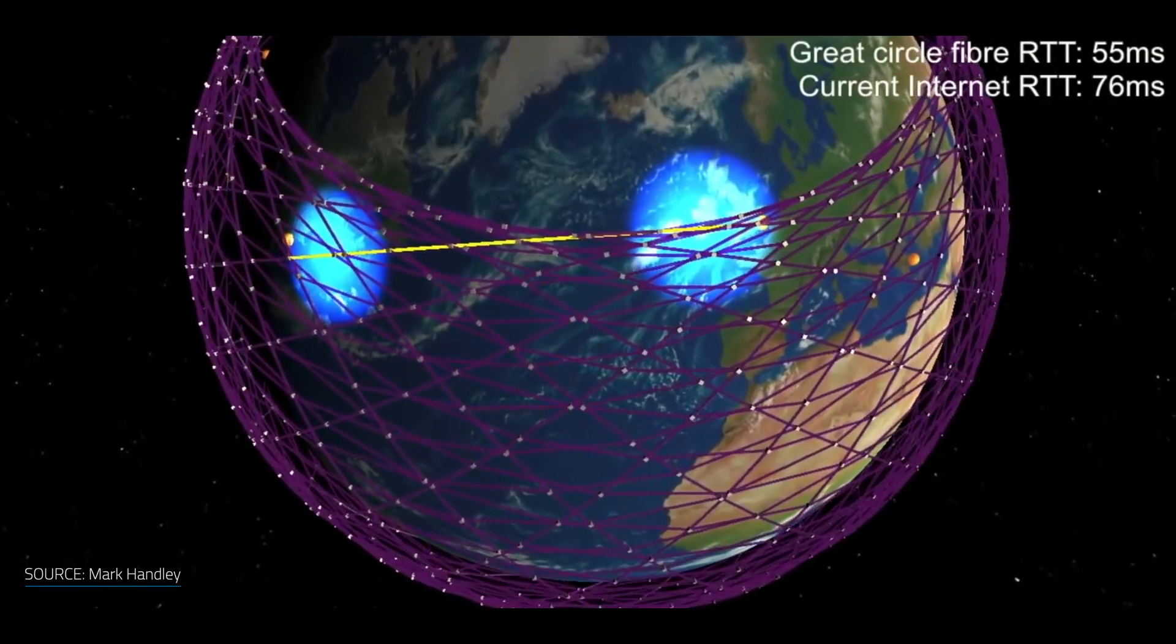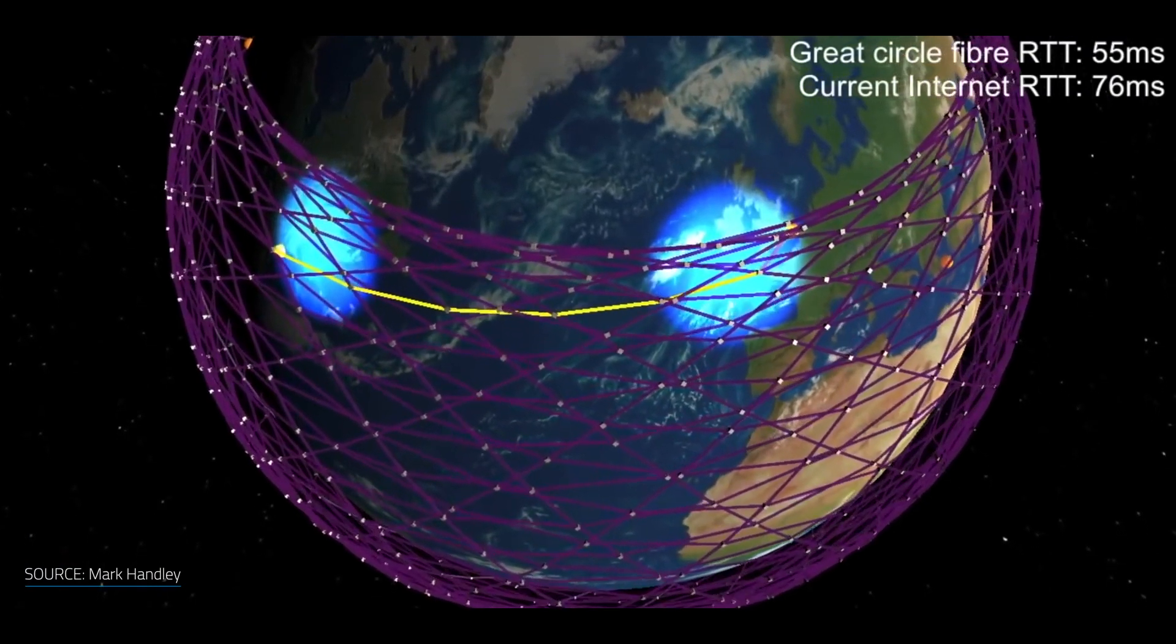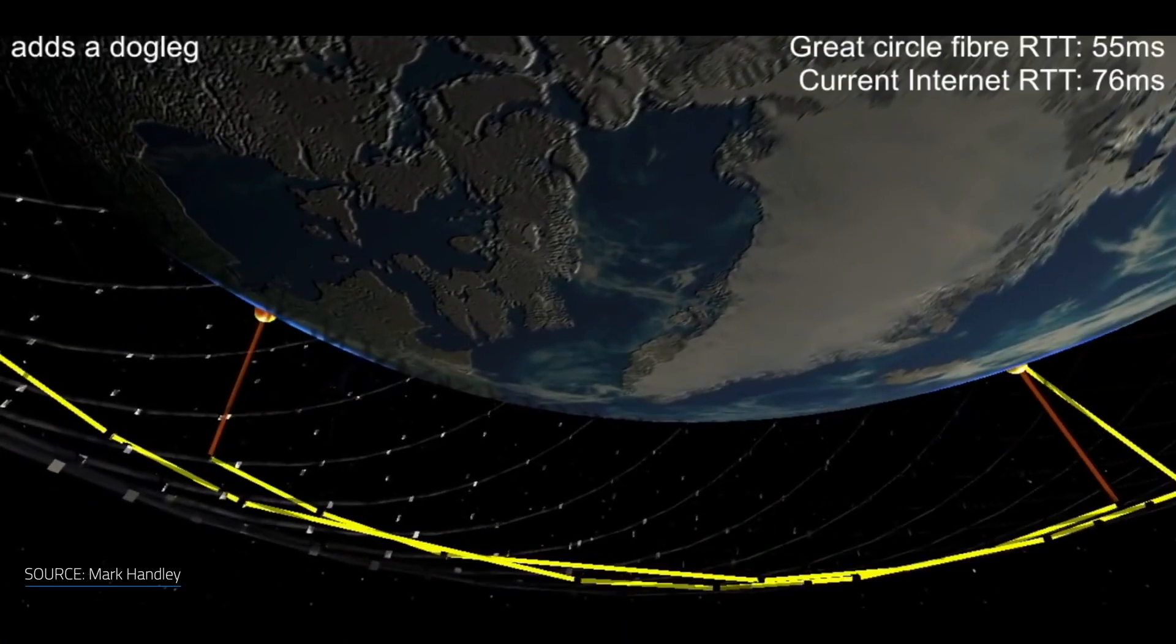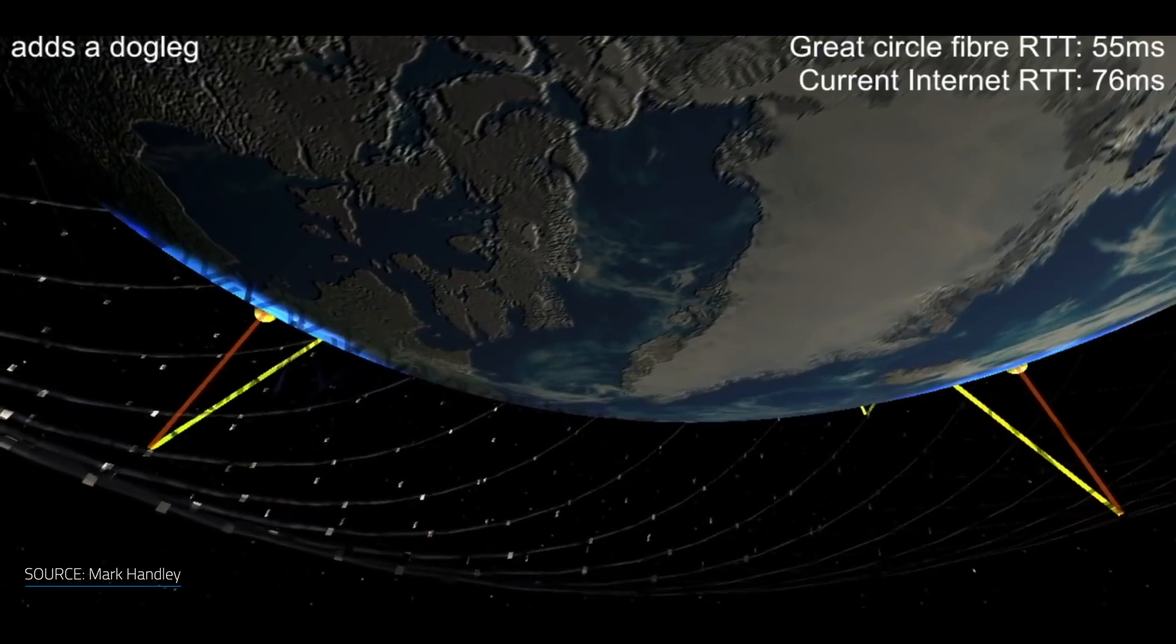This altitude is significant because it allows the satellites to be pulled back down to Earth over time due to gravitation. Well, why is this important?